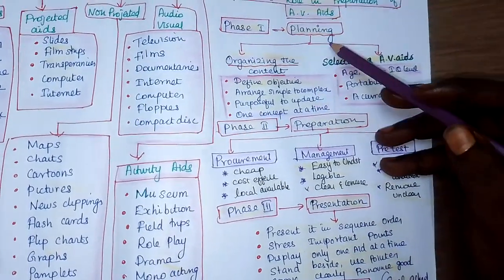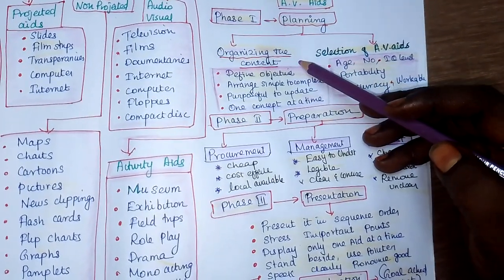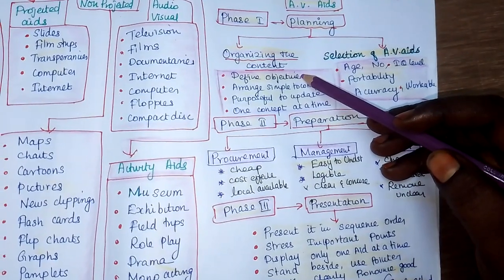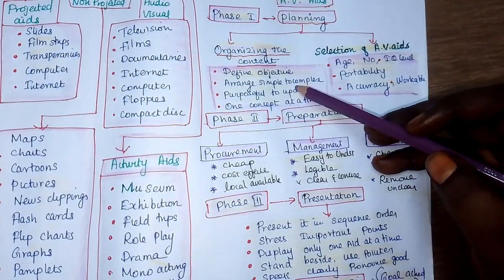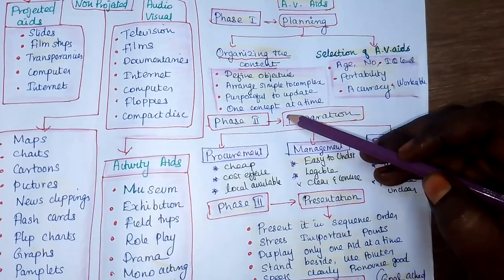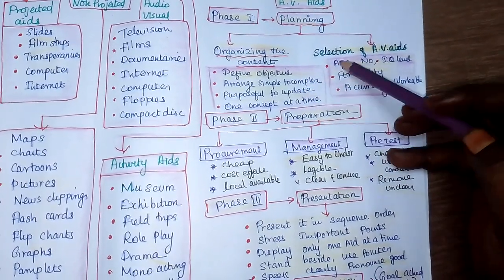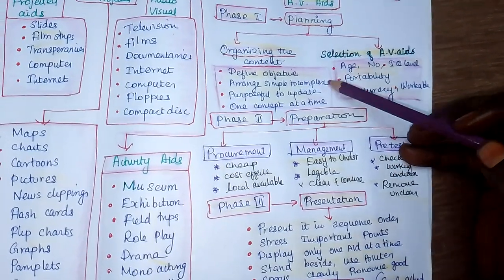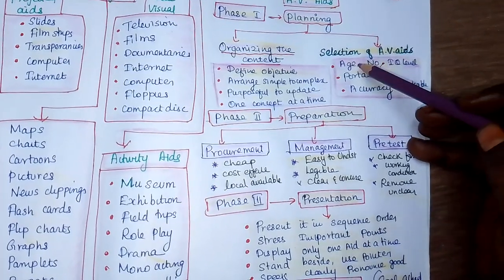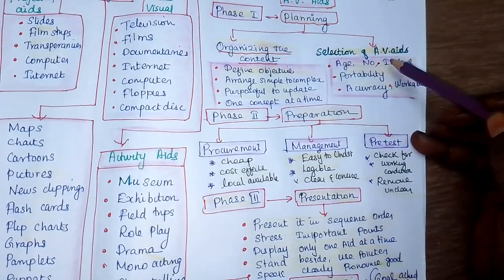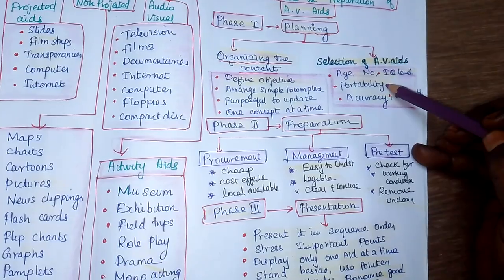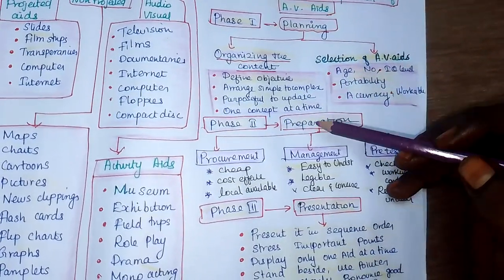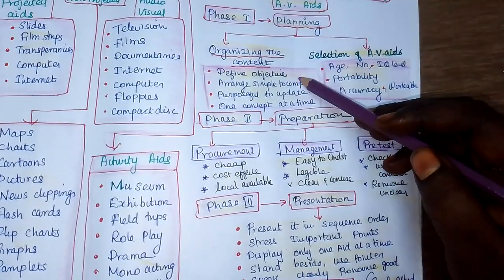In the Planning Phase, you organize the content. First, define the objectives and understand the learning objectives — accordingly prepare the AV aid. Arrange content from simple to complex, purposeful and up to date, one concept at a time. Then do the selection of AV aids: after organizing content in sequential order, select the most suitable AV aid. Keep in mind the audience's age, IQ level, number of audience members, portability of the aid, accuracy, and working condition.